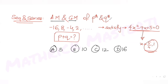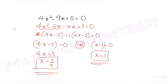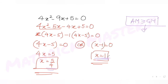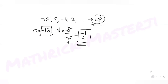The question states that the arithmetic mean and geometric mean of the pth and qth terms satisfy this equation, so one root is the AM and the other is the GM. We know that AM ≥ GM always. Comparing the roots: 5/4 is greater than 1, so the arithmetic mean is 5/4 and the geometric mean is 1.